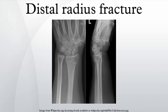The articular joint surface must be smooth for it to function properly. Irregularity may result in radiocarpal arthritis, pain, and stiffness. More than 1-2 mm of incongruity places the patient at high risk for post-traumatic arthritis. Significant articular incongruity typically occurs in young patients after high-energy injuries. If the surface is very irregular and cannot be reconstructed, then the only option may be a fusion.